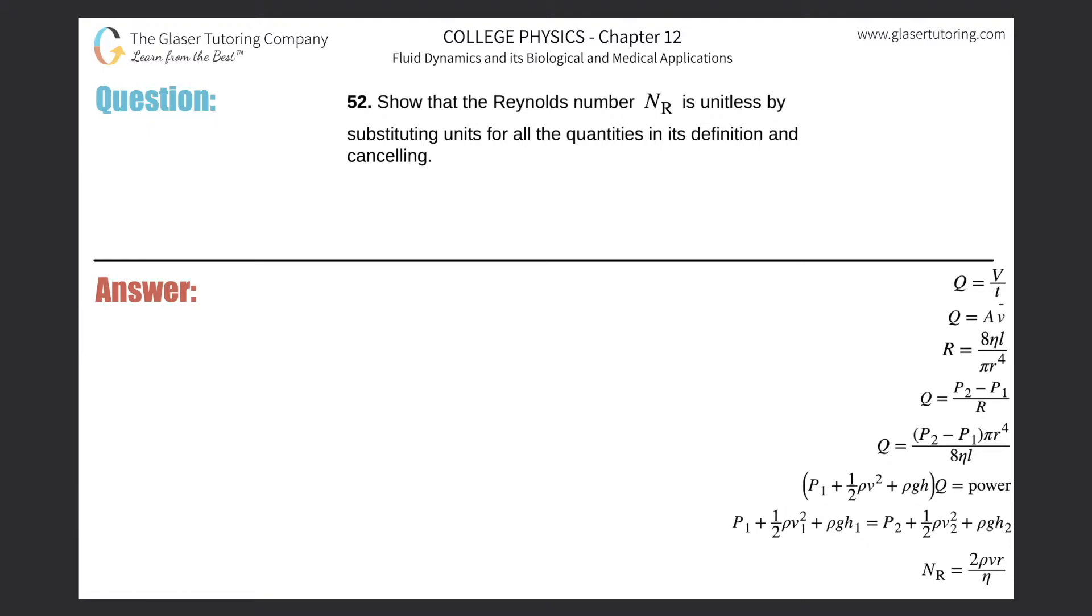Number 52, show that the Reynolds number N_R is unitless by substituting units for all quantities in its definition and canceling. So down here is the Reynolds number. Let's bring that front and center. The Reynolds number will be equal to 2 multiplied by the density multiplied by the velocity of the fluid multiplied by the radius all divided by the viscosity.